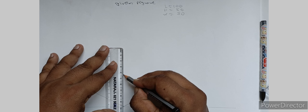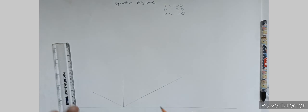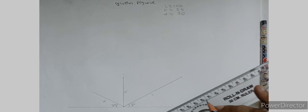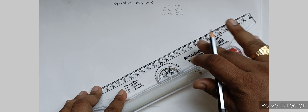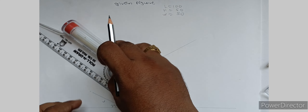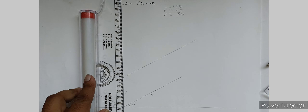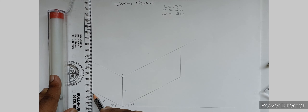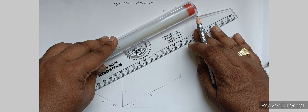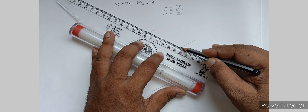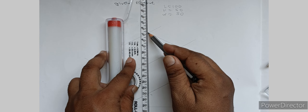Height here we have to take is 50 mm. Remember: 30-degree for length, 30-degree for width, and height is at 90 degrees. Now you have to make a cube — for that purpose you can draw parallel lines. This is the 3D cube.